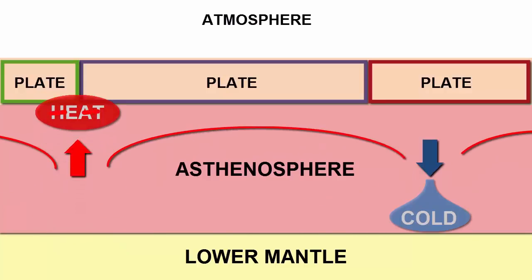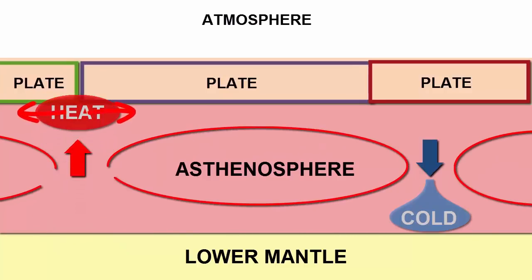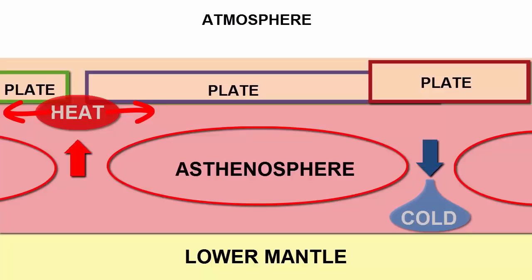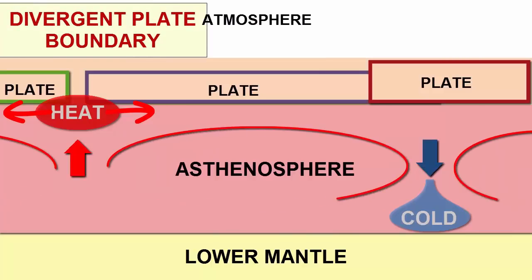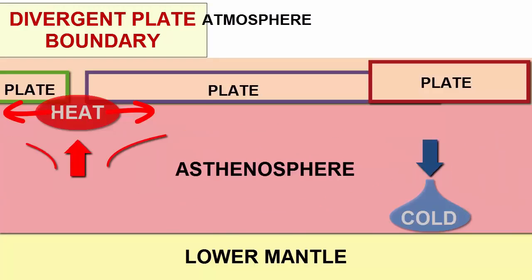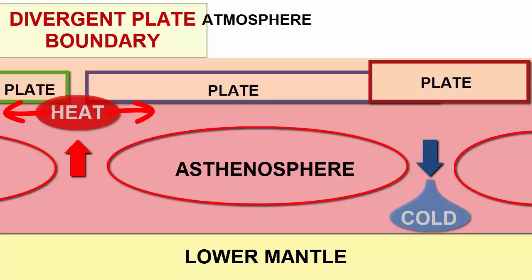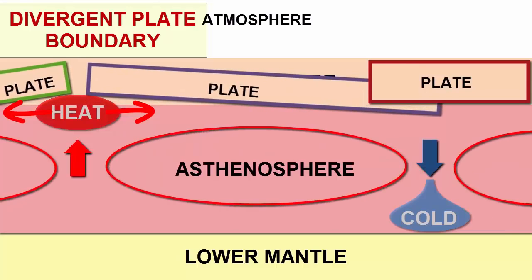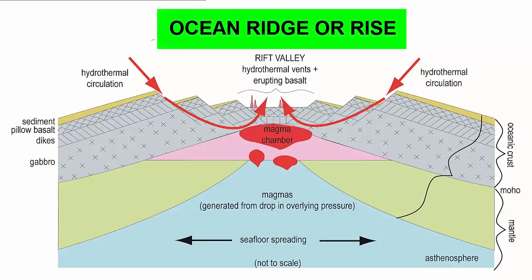That drags on the lithosphere above and causes it to stretch, thin, and break apart. On the surface, we call the zone where two plates are moving apart a divergent plate boundary. The buildup of heat and material below pushes the plate upward at this point and creates a linear mountain ridge. When these form along the ocean floor, we call them ocean ridges and rises.